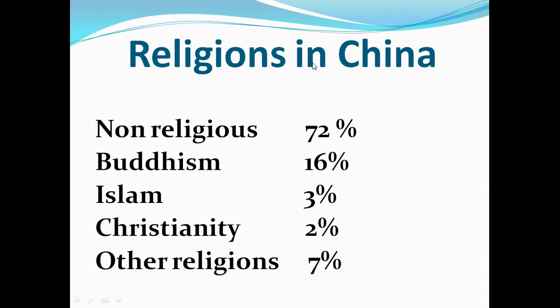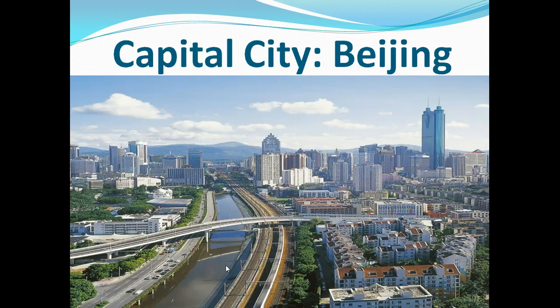Chin mein maujud mazahib ko agar dekha jai toh first of all Chin mein non-religious members ki tadaad hai 72 percent — yani woh afraad jo kisi bhi mazhab par amal nahi karte. Buddhism 16 percent, Islam 3 percent, Christianity 2 percent, other religions 7 percent hai.